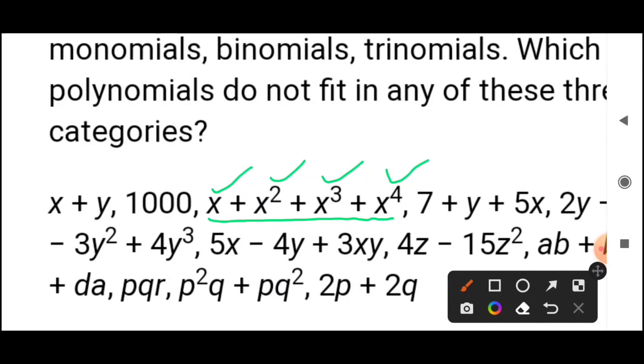So this is a polynomial which does not fit in these three definitions, these three types of polynomials, because it has more than three terms: one, two, three, and four. If there was one term we would call it monomial, if two then binomial, if three then trinomial. When it's more than three, it doesn't come in the monomial, binomial, or trinomial category.